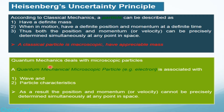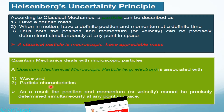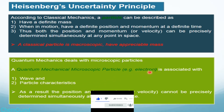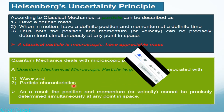Now let's talk about the quantum mechanical particle. The basic difference between a quantum mechanical particle and a classical mechanical particle is the difference in size. A classical particle has appreciable mass, but a quantum mechanical particle is a microscopic particle — like an electron, proton, neutron, or any subatomic particle. It not only is microscopic, but it also has two associated properties: it can exhibit both wave and particle characteristics.